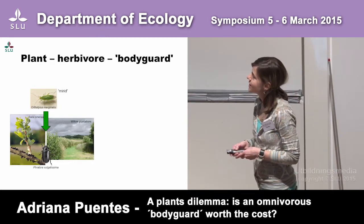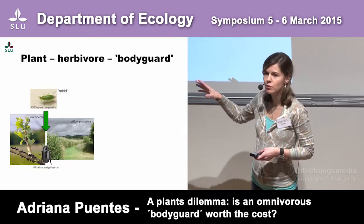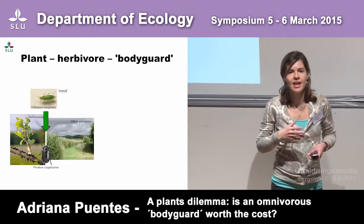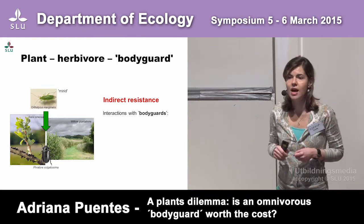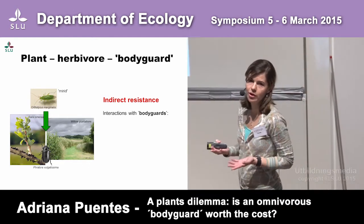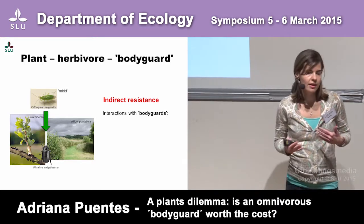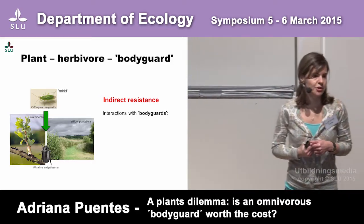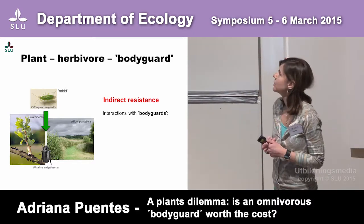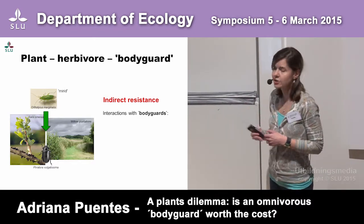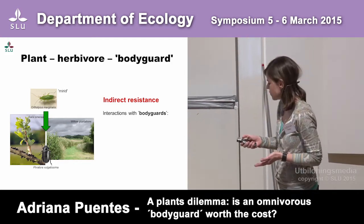When plants engage in interactions with the enemies of the herbivores that feed upon them, they gain indirect resistance through these so-called bodyguards. We have many examples of these bodyguards — the very famous predatory ants and the ant-acacia example, and interactions with parasitoid wasps. In order for these interactions to actually provide indirect resistance to the plants, they have to meet certain criteria.